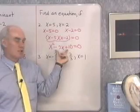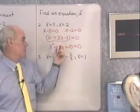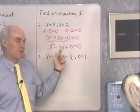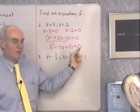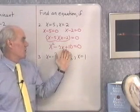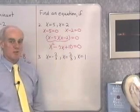Now, any constant multiple of this equation also would have solutions of x equal 5 and x equal 2. For instance, 2x squared minus 14x plus 20 equal 2 times 0, which is 0, also has those solutions. So here's one equation, though, probably the simplest form equation that we can find that has these two numbers as solutions.